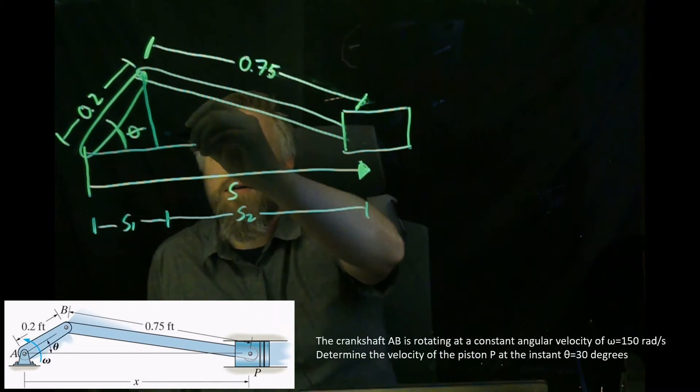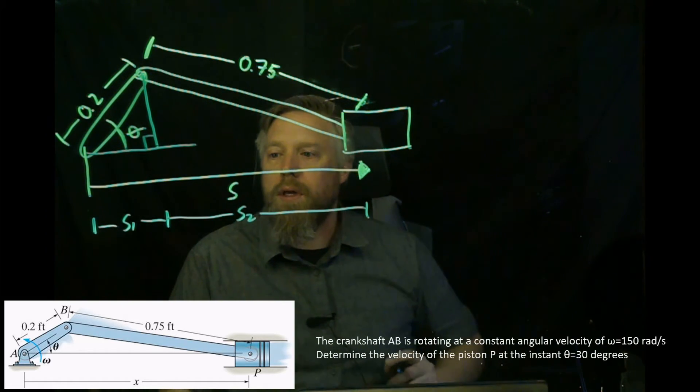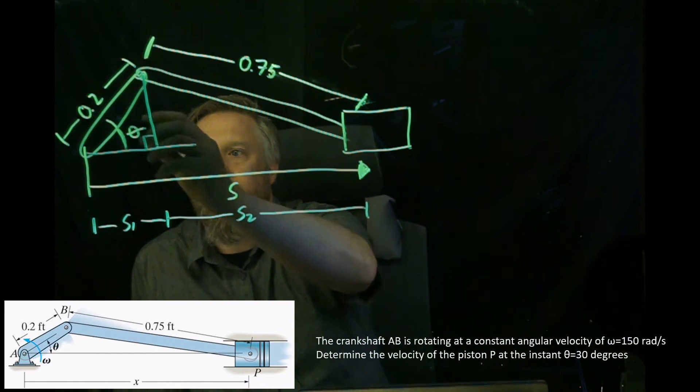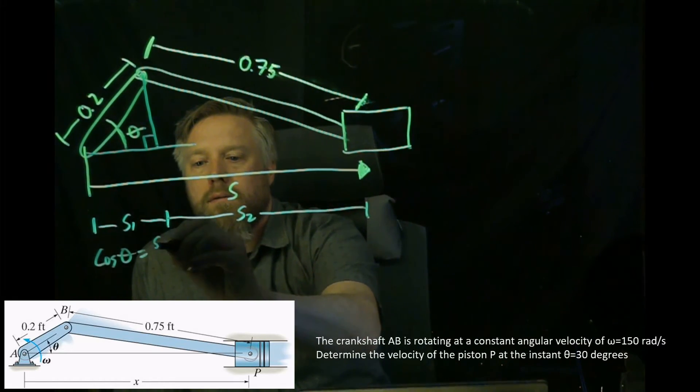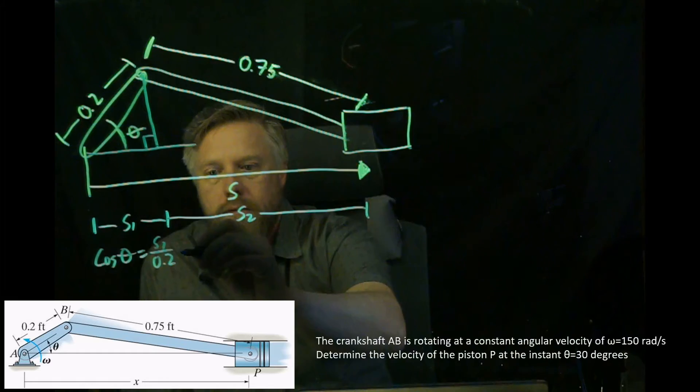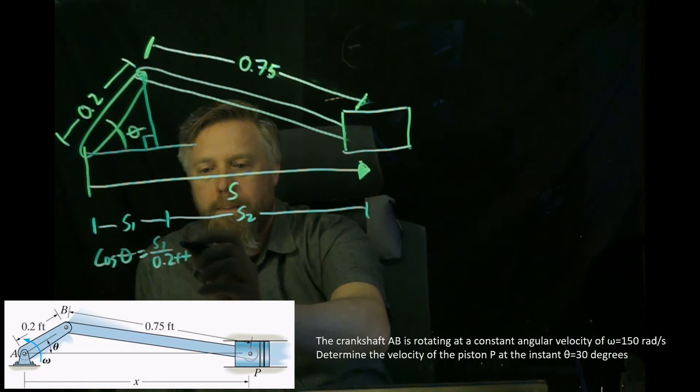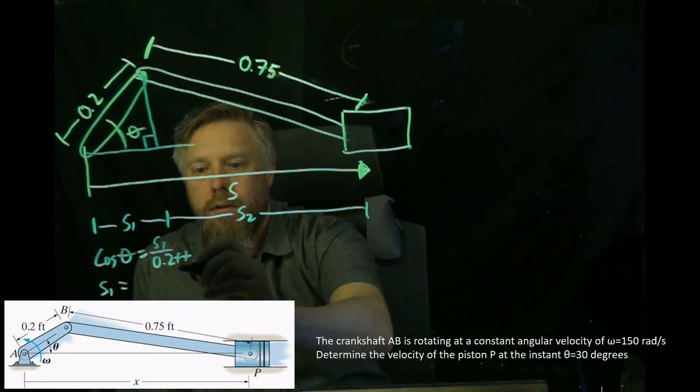For S1, we do have a right angle. We've got a right triangle and we can use sine and cosine. If we said the cosine of theta, we would end up with S1 over 0.2. Let's see, what is this in? 0.2 feet. If we solve for S1, we end up with S1 equals 0.2 cosine theta.